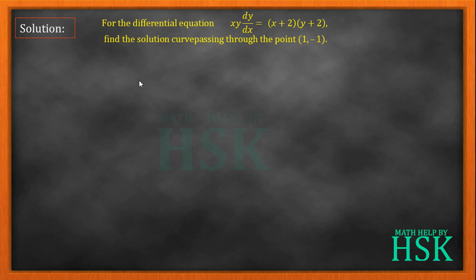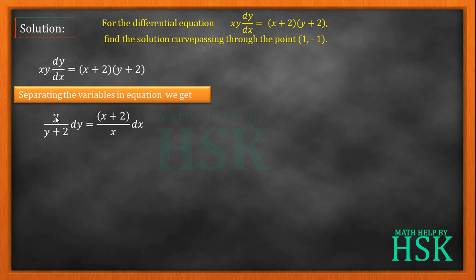To solve this differential equation, I first observe that the variables can be separated. Separating the variables, I obtain y/(y+2) dy = (x+2)/x dx, where (y+2) is cross-multiplied to the right and x is cross-multiplied to the left. Next, we need to simplify these two terms — y/(y+2) and (x+2)/x — so that we can integrate them.